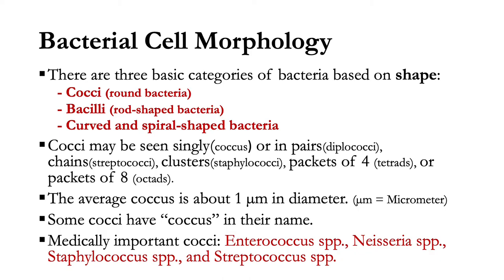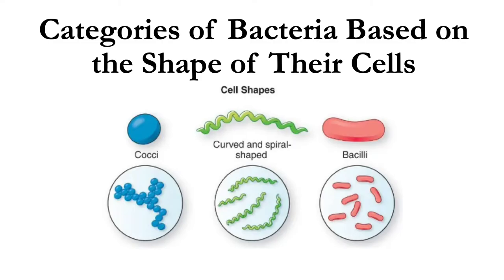There are three basic shapes of bacteria: cocci (round bacteria), bacilli (rod-shaped bacteria), and curved and spiral-shaped bacteria, sometimes referred to as spirilla. Cocci may be seen singly or in pairs, chains, clusters, packets of four, or packets of eight, depending on the species and the manner in which cells divide. The average cocci is about one micrometer in diameter. Examples of medically important cocci include Enterococcus species, Neisseria species, Staphylococcus species, and Streptococcus species.